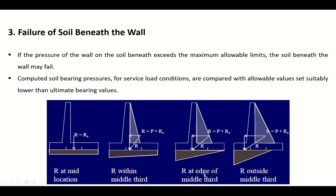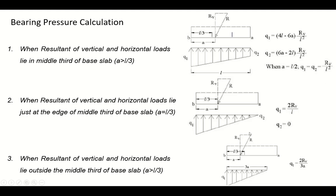The third failure is soil failure beneath the wall. If the resultant lies in the middle of the base, pressure distribution is uniform — the best condition. If it moves toward the middle third, pressure at the toe increases and at the heel decreases. If it moves outside the middle third, part of the base becomes overstressed while the other part has zero stress, causing the soil to fail. The resultant should always lie within the middle third to avoid this condition.